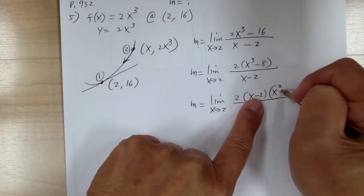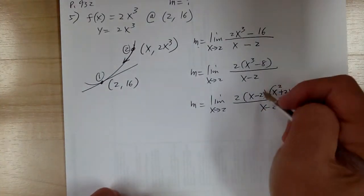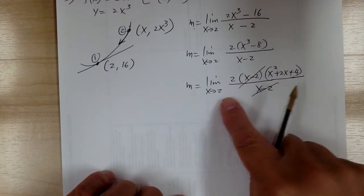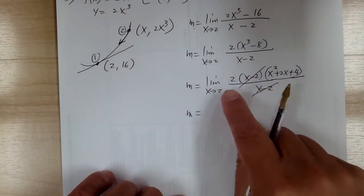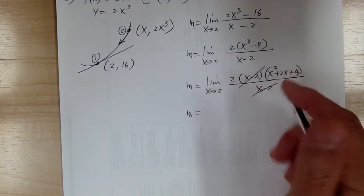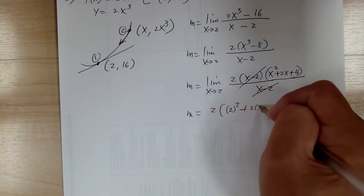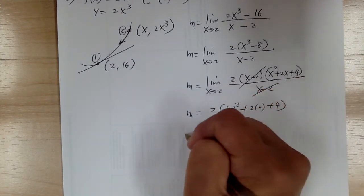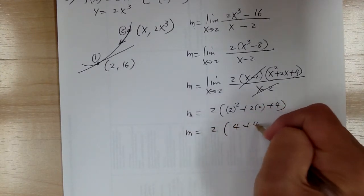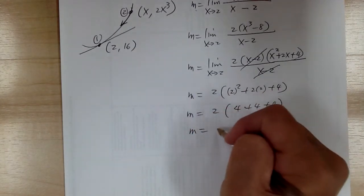So it would be x squared plus 2x plus 4. Go ahead and cancel these things out. As soon as you cancel out, you can substitute the 2 in here. You have to keep the limit until you substitute — as soon as you substitute, you can drop the limit. So you go to 2 times 2 squared plus 2 times 2 plus 4. So slope equals 2 times 4 plus 4 plus 4 — slope equals 12 times 2, which gives you 24.